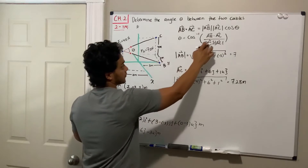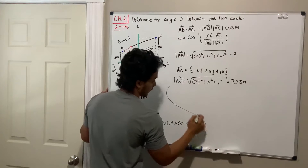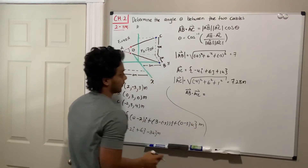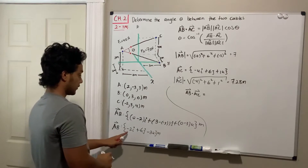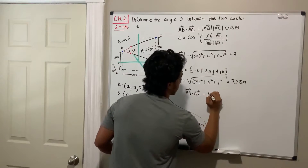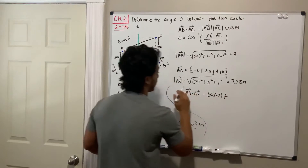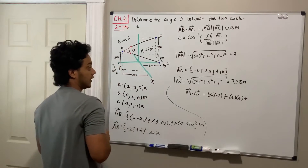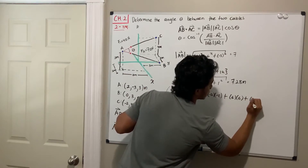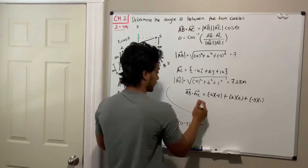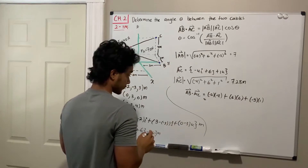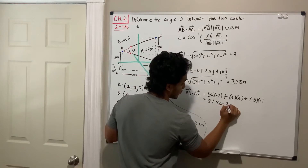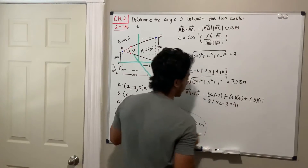Now we need the dot product of AB and AC. We multiply corresponding components: (−2)(−4) + (6)(6) + (−3)(1) = 8 + 36 − 3 = 41. Since this is a dot product, the result is a scalar with no direction.